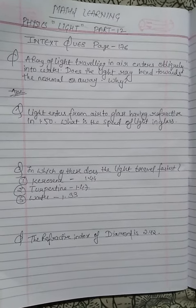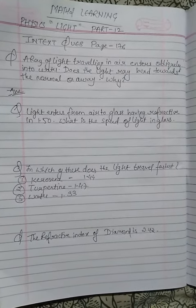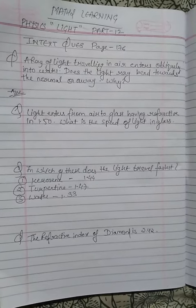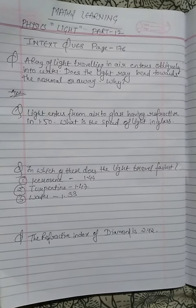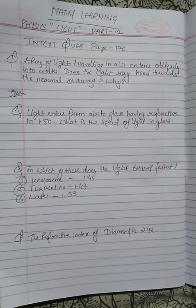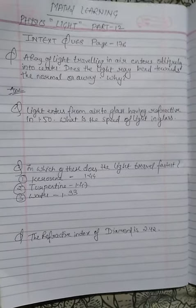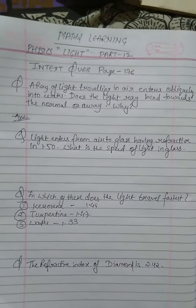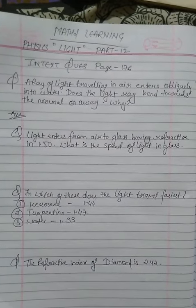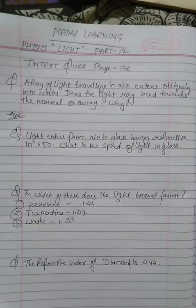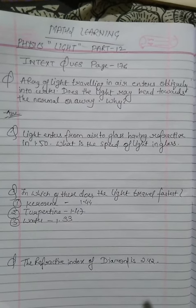The first question is: a ray of light traveling in air enters obliquely into water. Does the light ray bend towards the normal or away from the normal, and why? When a light ray goes from a rarer medium to a denser medium, it bends towards the normal.